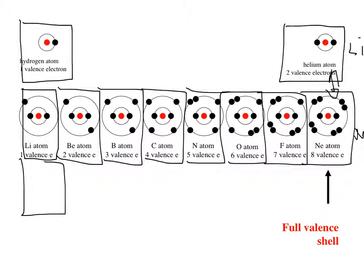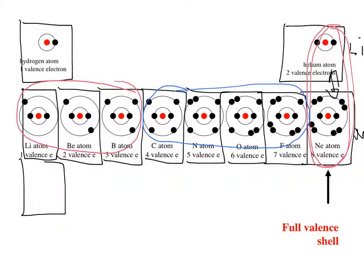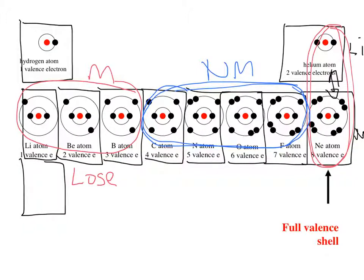All elements are trying to become like the noble gases — they all want to fill their valence shells. Metals typically have either one, two, or three valence electrons — not very many. Non-metals tend to have lots of valence electrons, usually four or more. That's what really determines the difference between a metal and a non-metal: how many valence electrons. Because metals have very few, they tend to lose those electrons to fill their valence shell; non-metals will try to gain electrons to fill their valence shell.